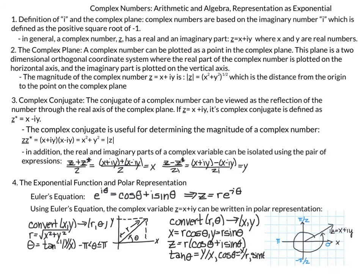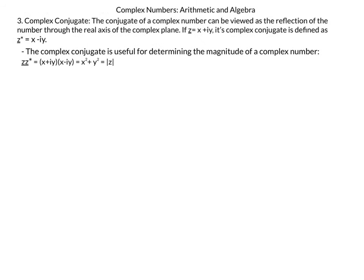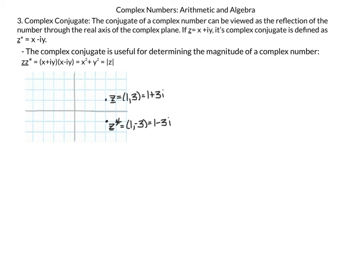The next topic is the complex conjugate, which you're probably familiar with from algebra. The complex conjugate can be viewed as the reflection of a number through the real axis of the complex plane. If z equals x plus iy, its complex conjugate — denoted z asterisk — is equal to x minus iy. For example, if z equals 1 plus 3i, then z* equals 1 minus 3i: it is a reflection across the real axis.